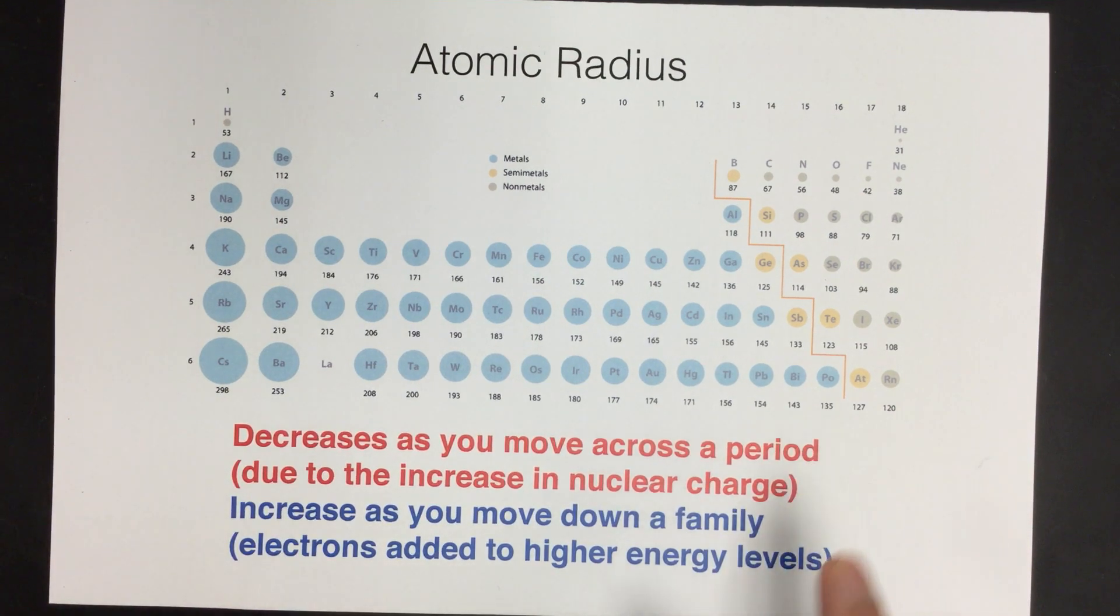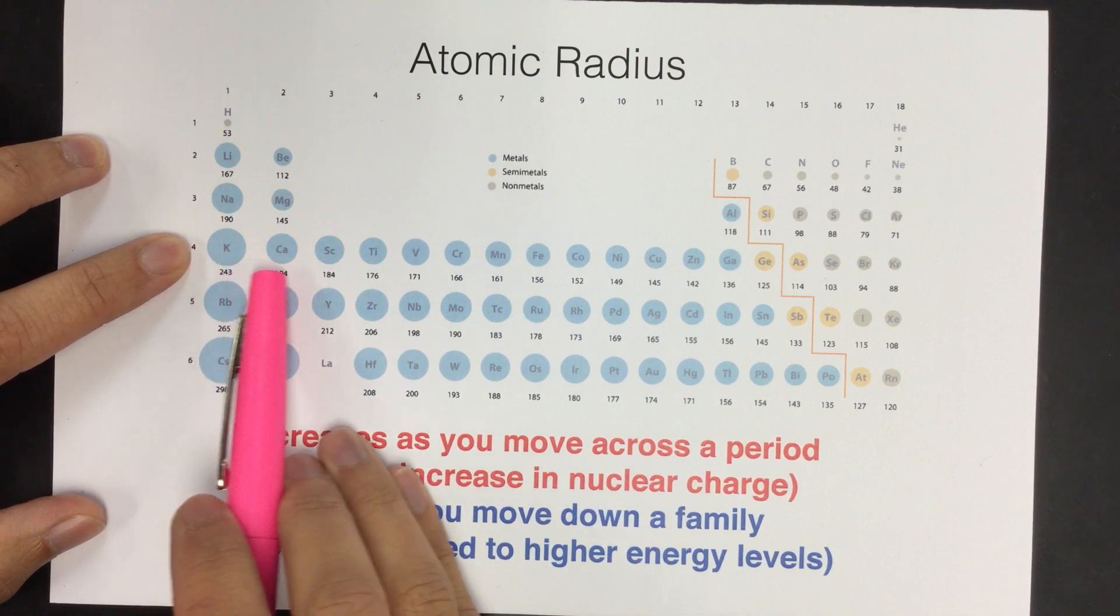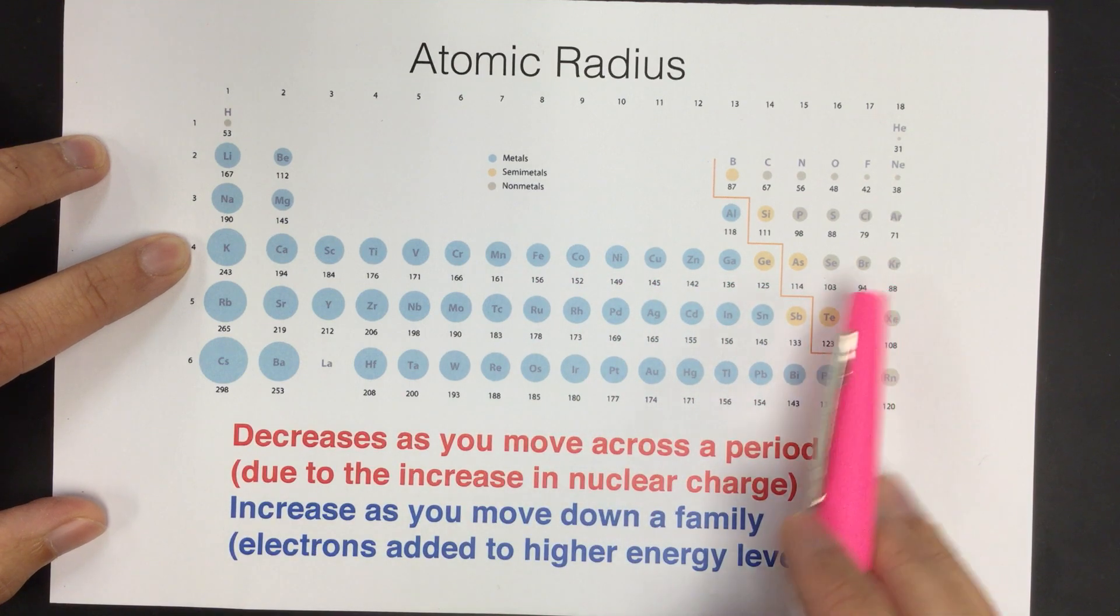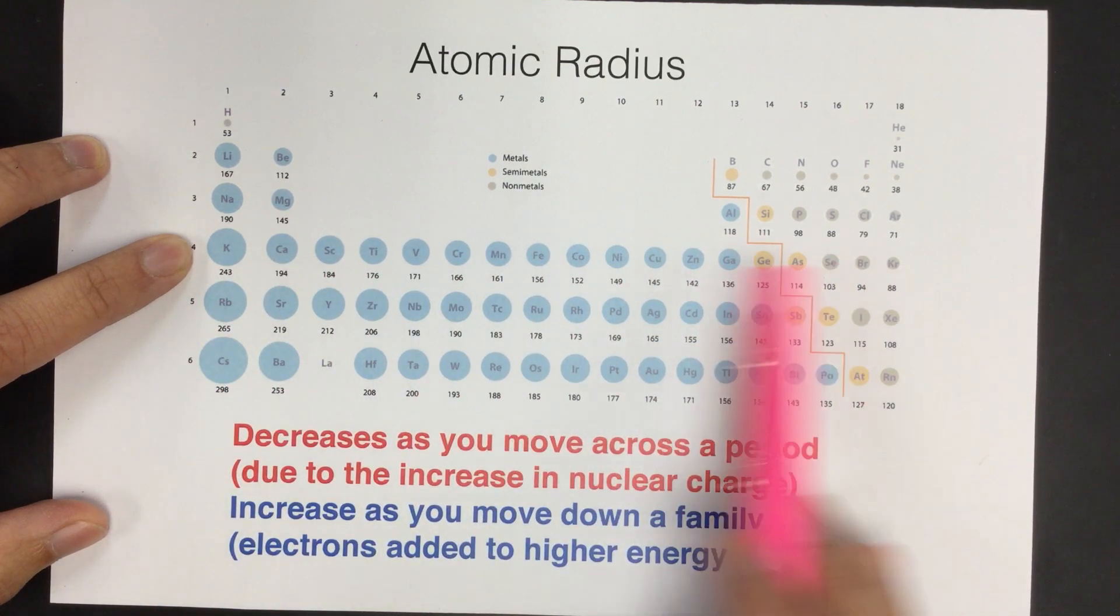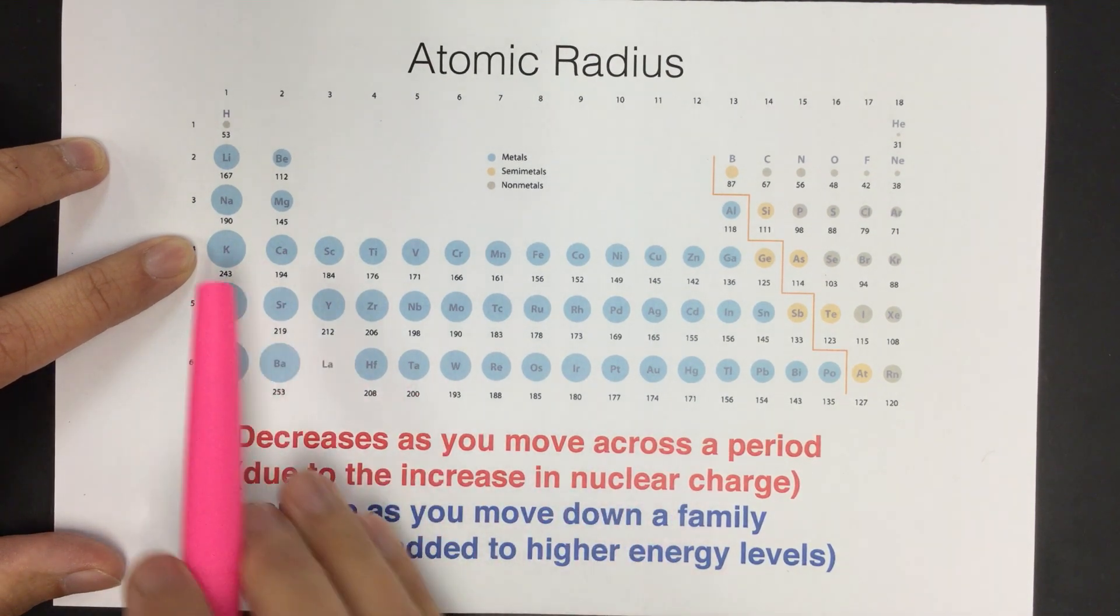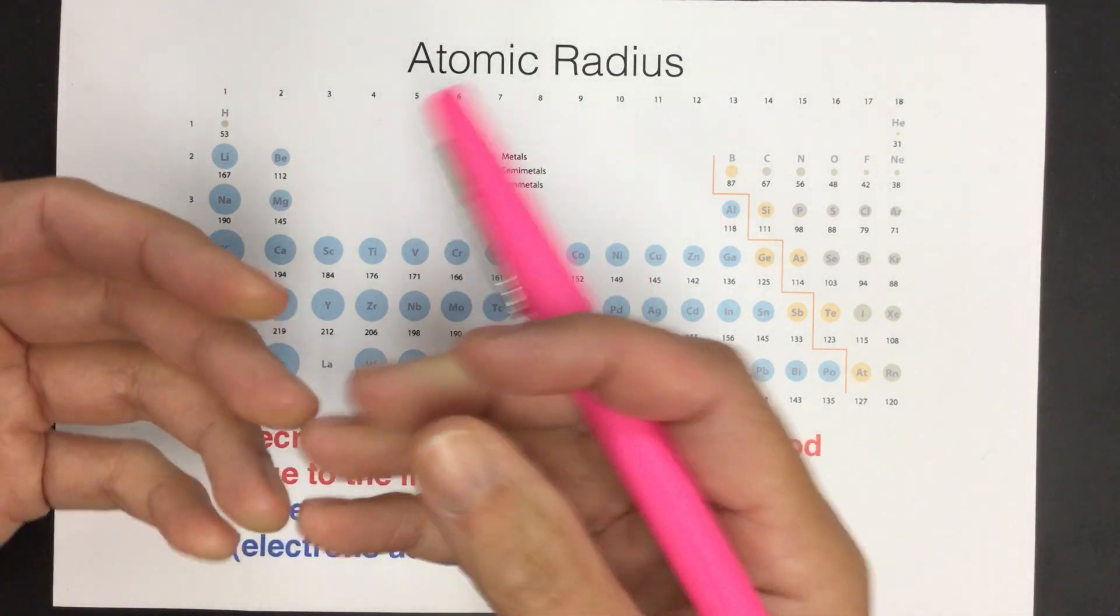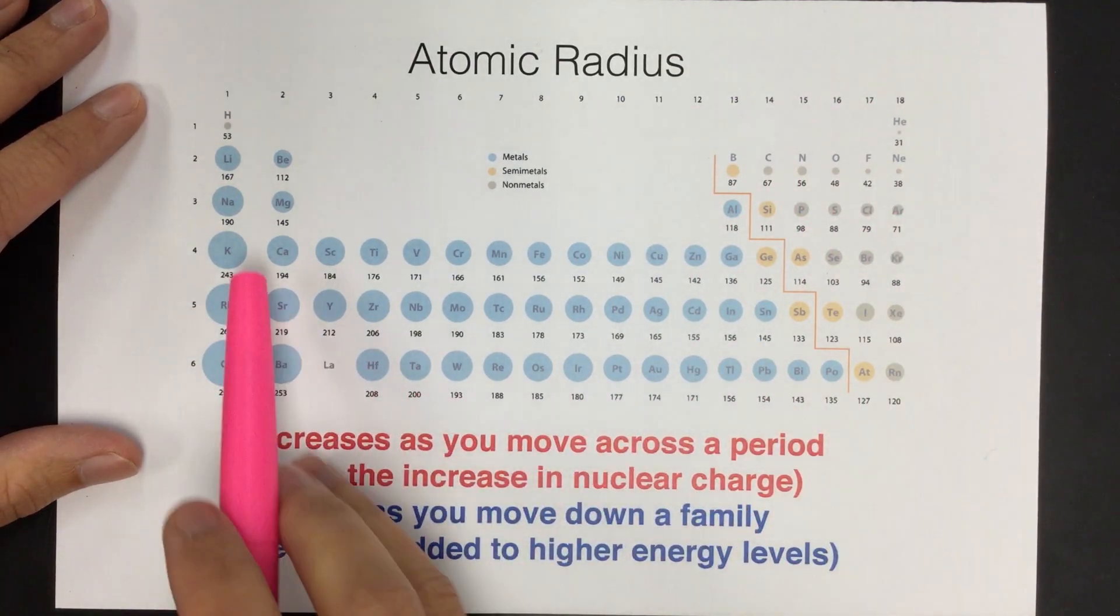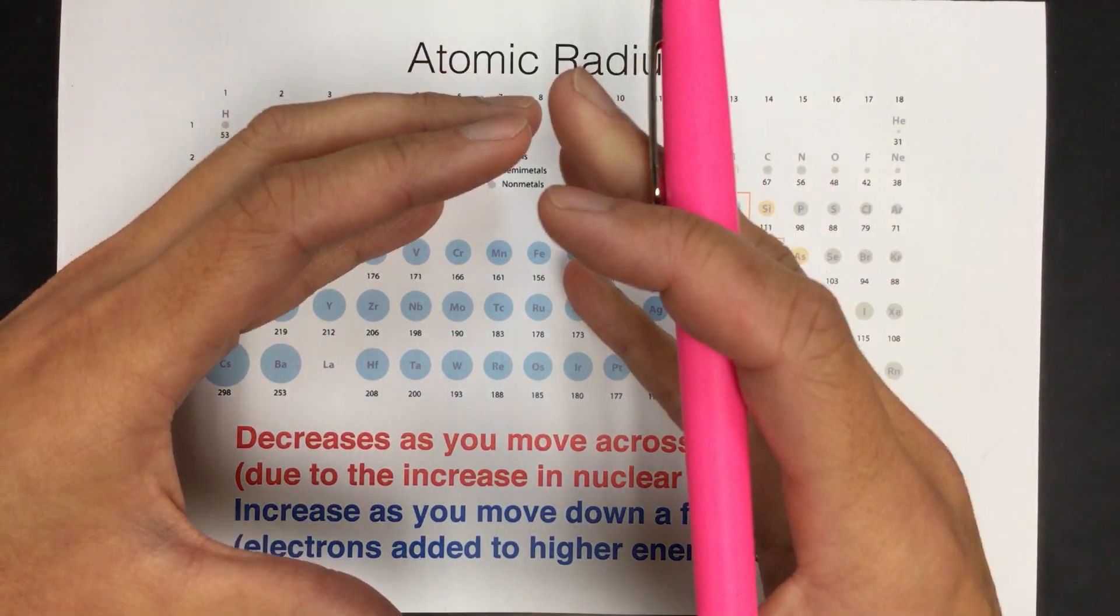So as we go across a period here, let's say if we're in the fourth period, we start with potassium and as we move across, we notice that the size of the atoms is getting smaller. And that's a little bit counterintuitive because we know that we're going up in the number of protons as we go across. However, the reason that they get smaller is due to the increase in the nuclear charge. So it means that since we are increasing our number of protons as we go across, the protons in the nucleus act as a stronger magnet. So as we're increasing the number of positive charges in the nucleus, it can pull those electrons in closer and closer and closer, making the atom get smaller and smaller and smaller.